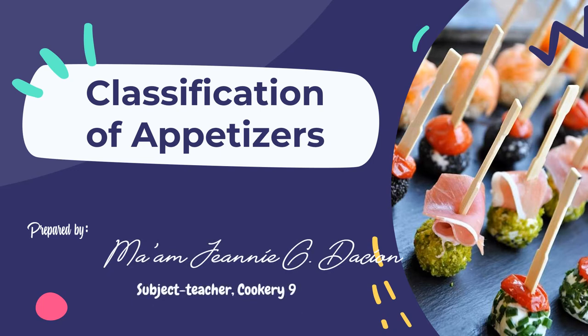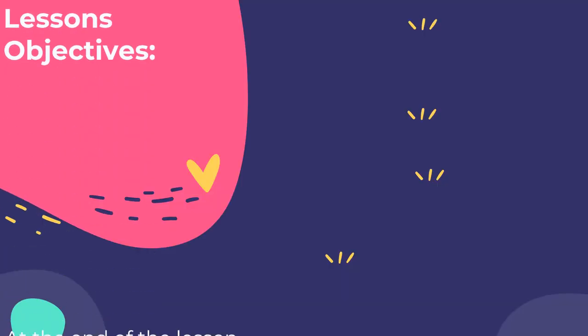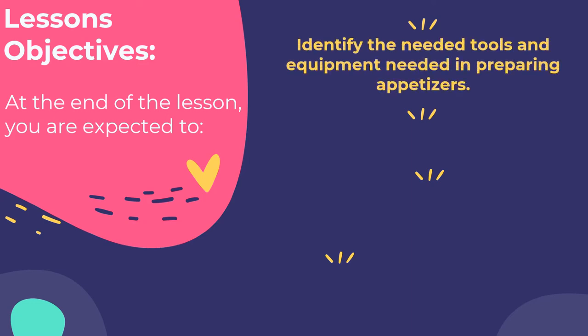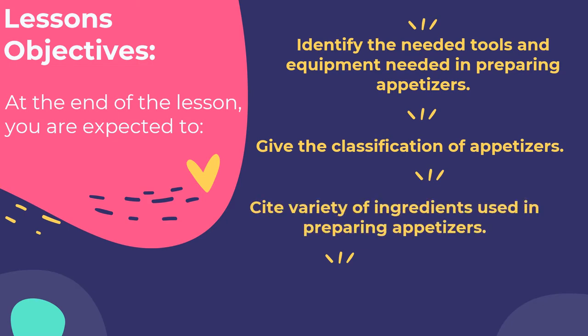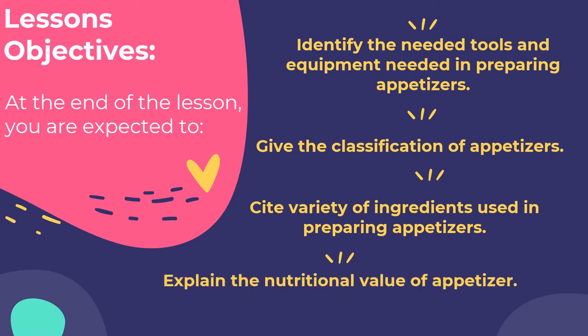Choosing the right kind of appetizers to be served depends on the kind of dish served in a meal. They should be light in nature so as not to make the customer full without trying the main course and leaving no space for dessert. An appetizer is defined as a small amount of food usually taken before the main course to stimulate appetite. The learning objectives are: identify tools and equipment needed in preparing appetizers, give the classification of appetizers, cite variety of ingredients used, and explain the nutritional value of appetizers.